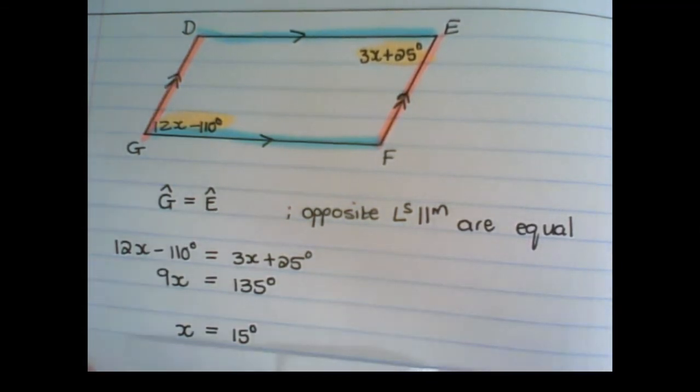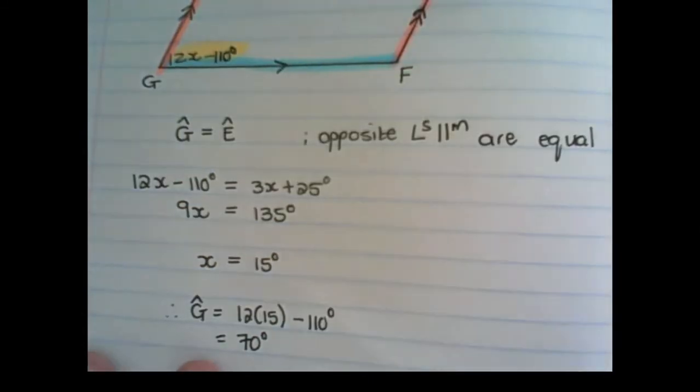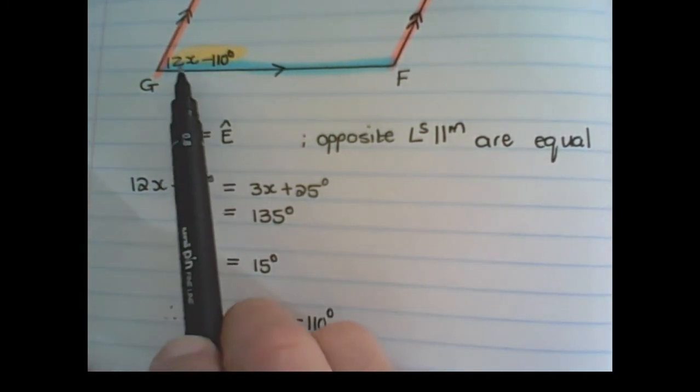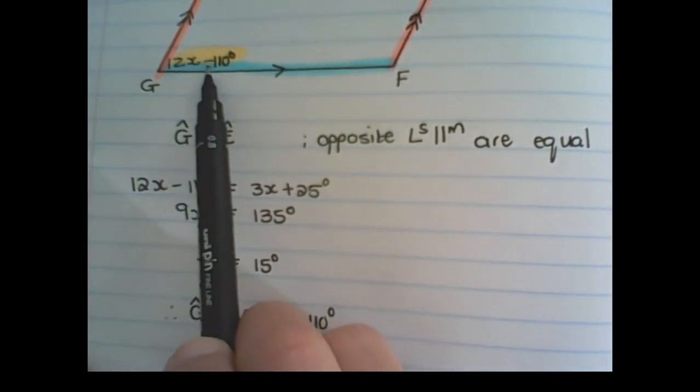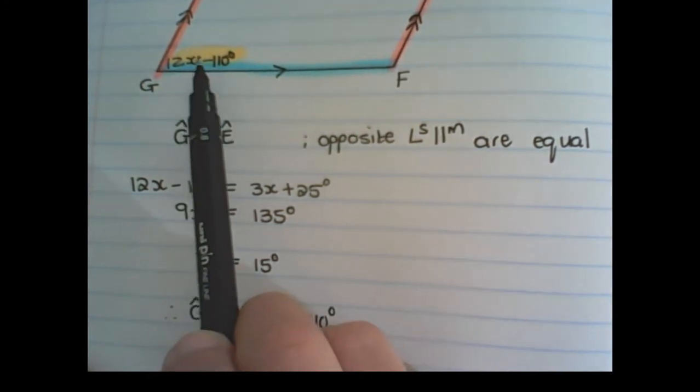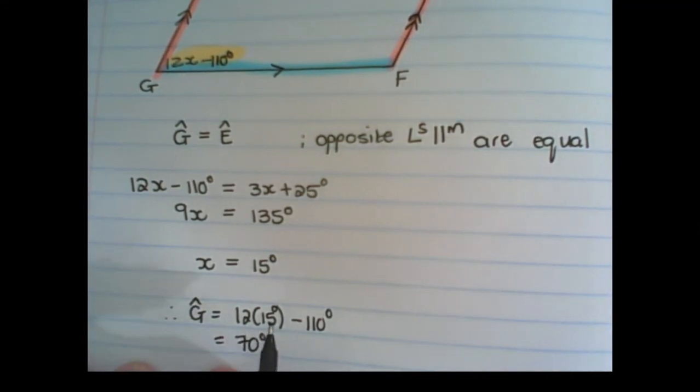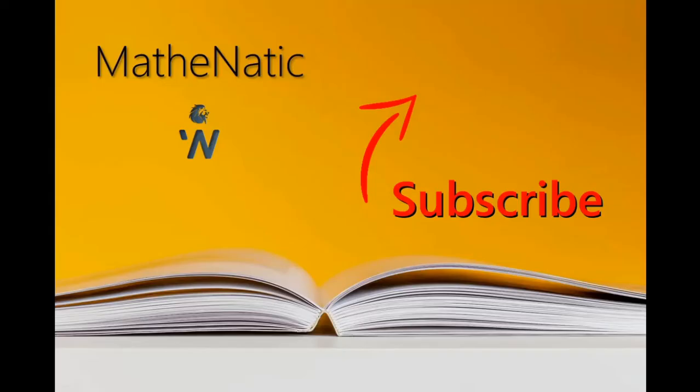But we want to find the angle G, not just x. So I take the value of x and I substitute it into the angle size of G which is 12x minus 110 degrees. And I replace x with 15. So then I have 12 times 15 degrees minus 110 degrees which gives us 70 degrees.